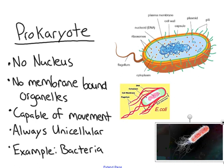Since prokaryotes are more simple, they can be capable of movement and they are always unicellular, meaning a living organism made up of just one cell. That's why they need movement. An example of prokaryotes would be bacteria — such as E. coli or Salmonella. I've put two pictures of bacteria here.